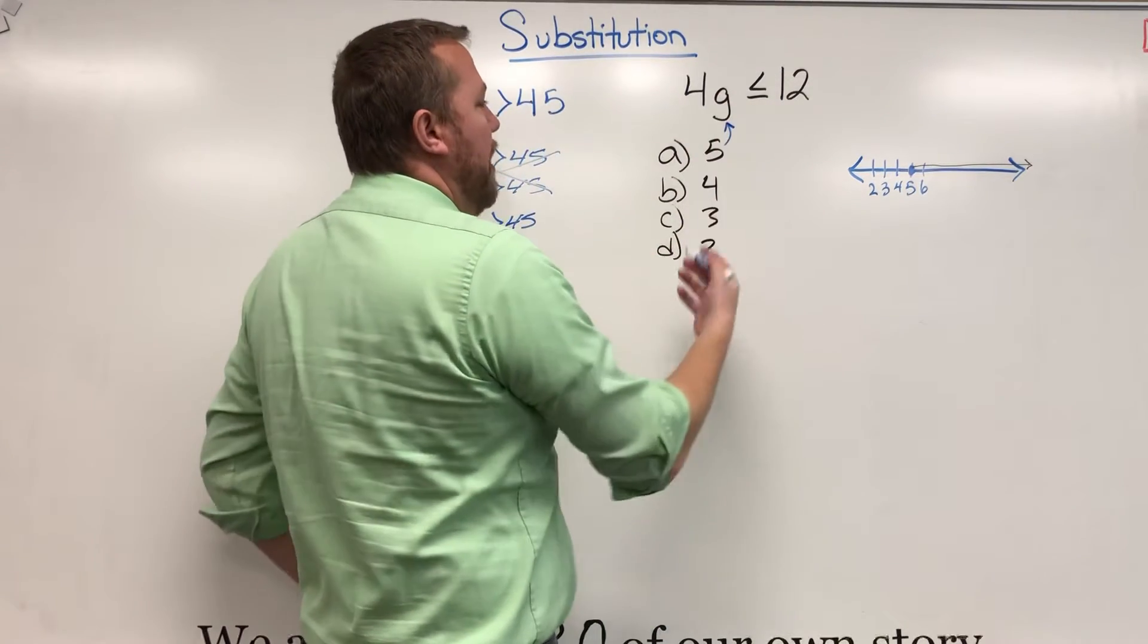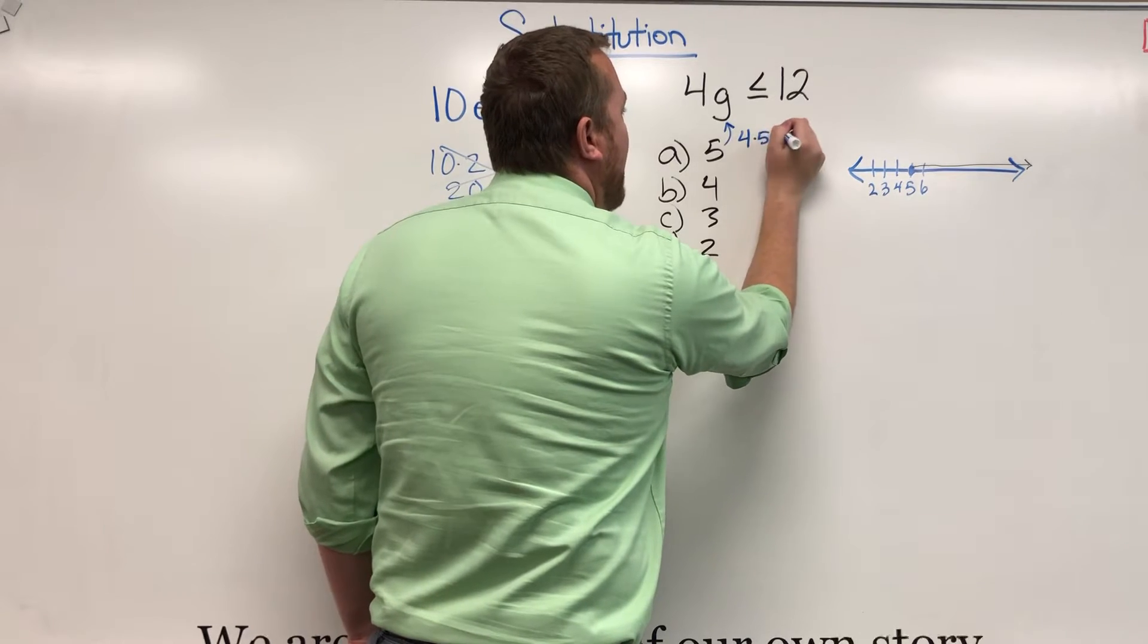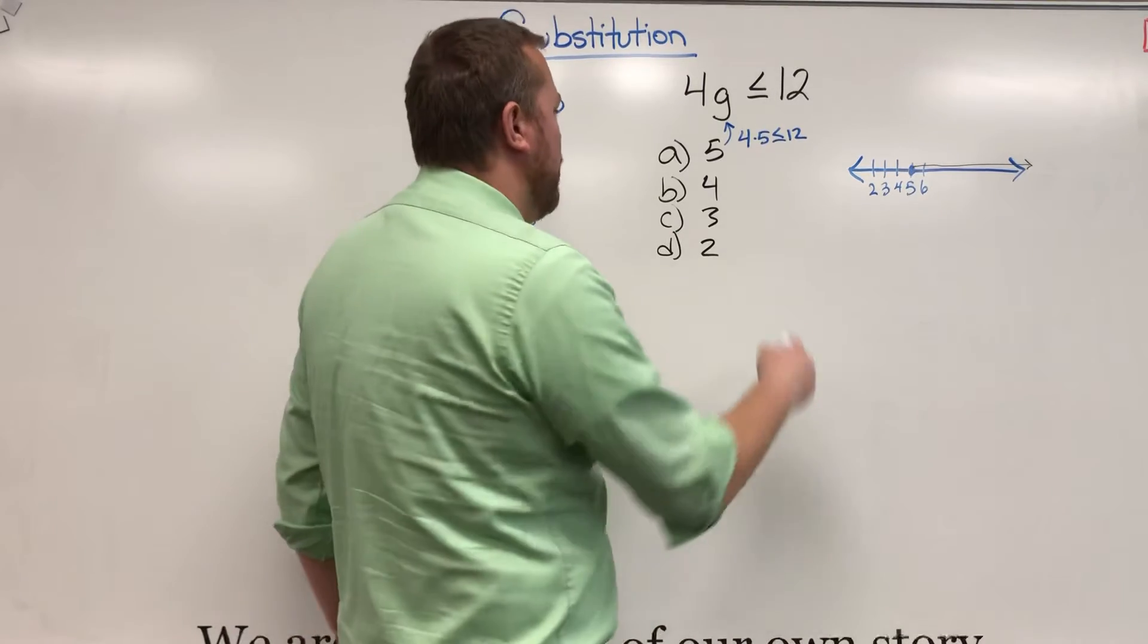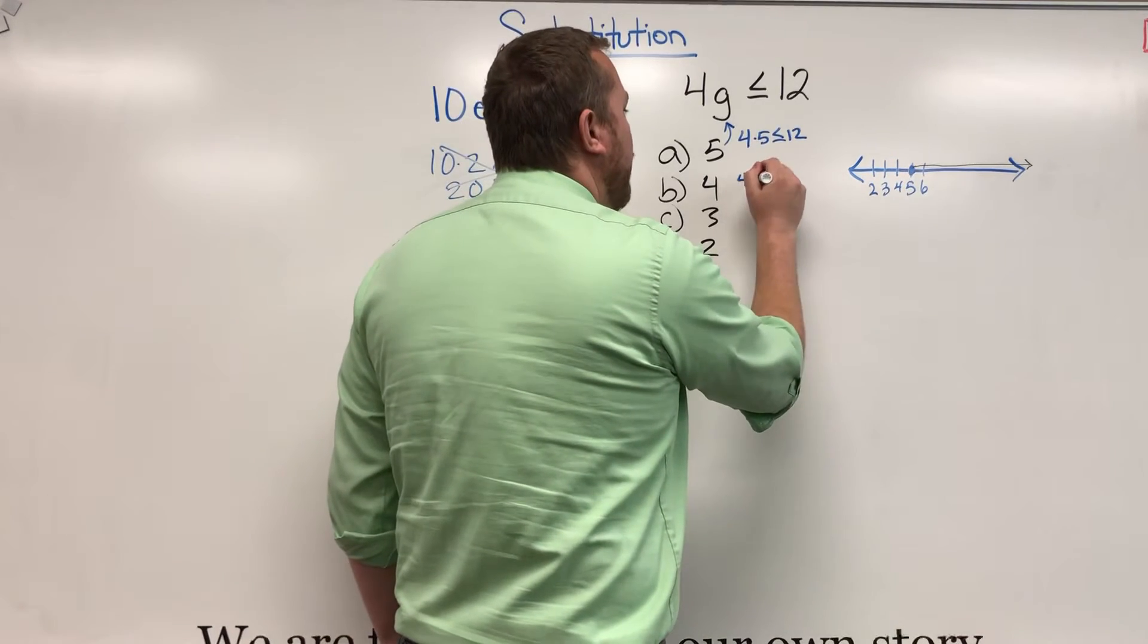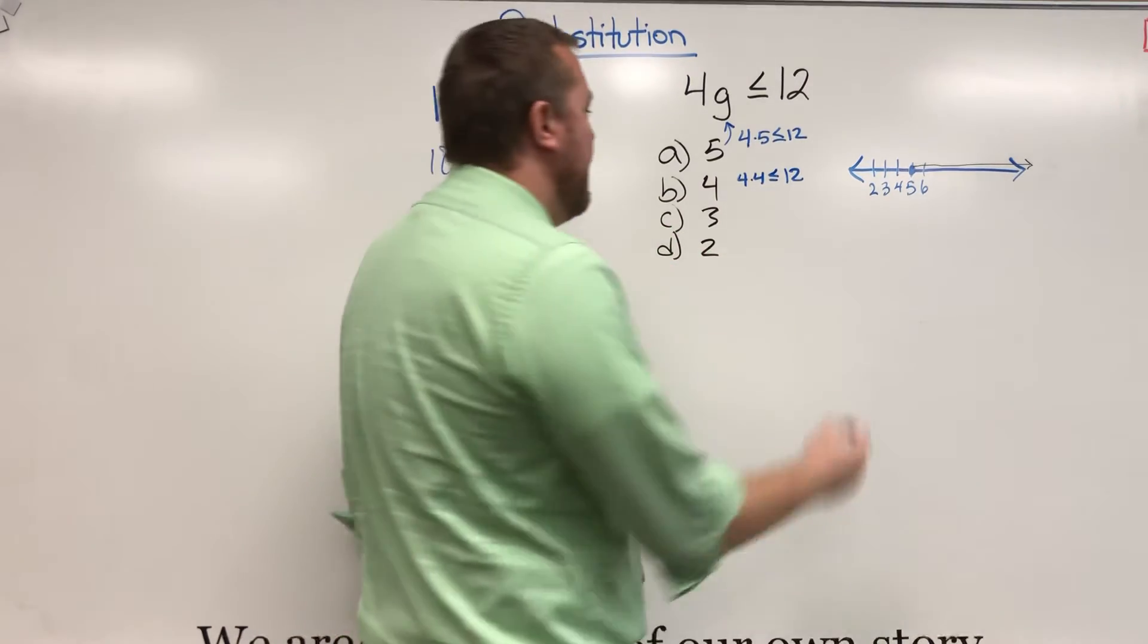We know the coefficient is multiplication. So thinking 4 times 5, is that less than or equal to 12? 4 times 5 is 20. That's not less than or equal to 12. Let's try 4 times 4. Is that less than or equal to 12? That's 16. That's not gonna work.